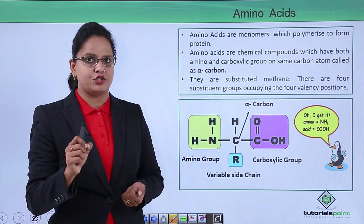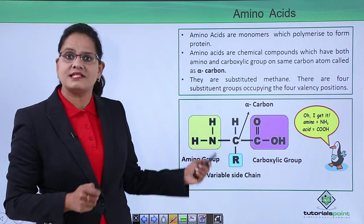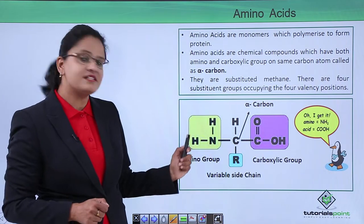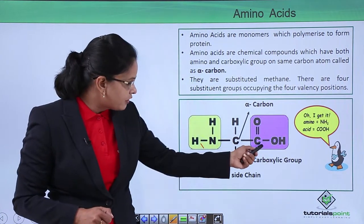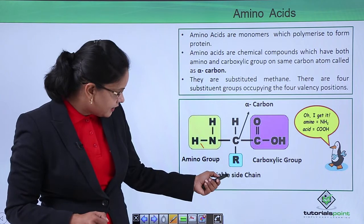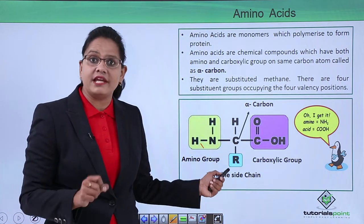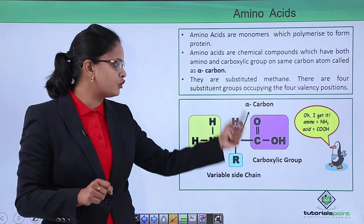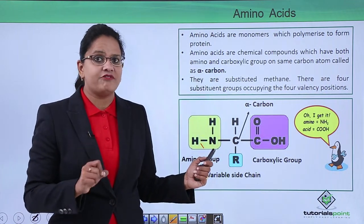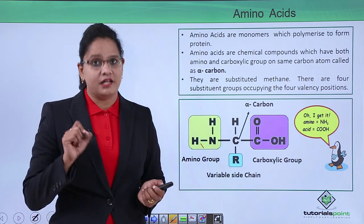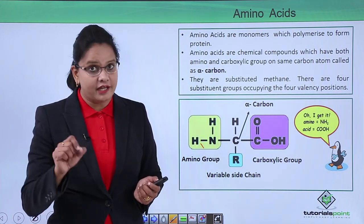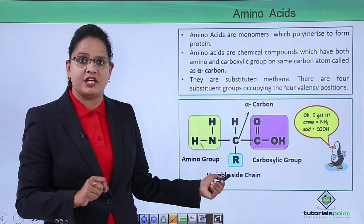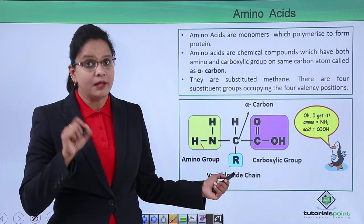Have a look — this structure resembles methane. In methane all four valencies are satisfied by hydrogen, but here all four valencies are satisfied by different functional groups. On the left-hand side is an NH₂ group, on the right-hand side is a carboxyl group, the R group is a variable side chain, and the fourth group is hydrogen. Since all four groups are different, this carbon is a chiral (asymmetric) carbon, so amino acids are also chiral in nature.